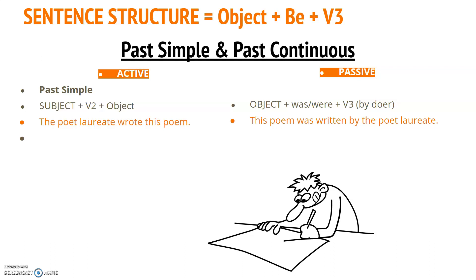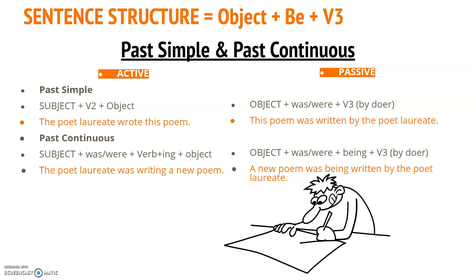Past simple: 'The poet laureate wrote this poem' becomes 'This poem was written by the poet laureate.' Past continuous: 'The poet laureate was writing a new poem' becomes 'A new poem was being written by the poet laureate.' Again, with the past continuous we need 'being' — 'was being written' — past continuous passive voice.